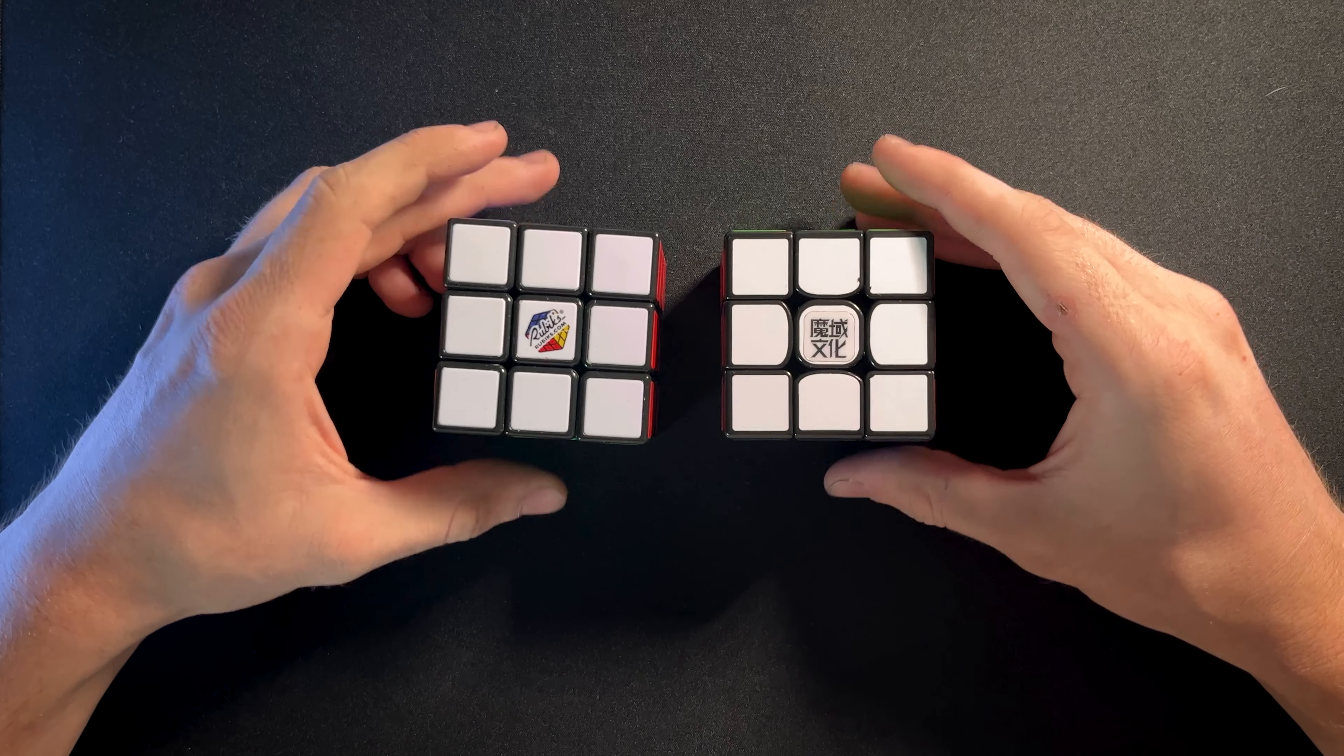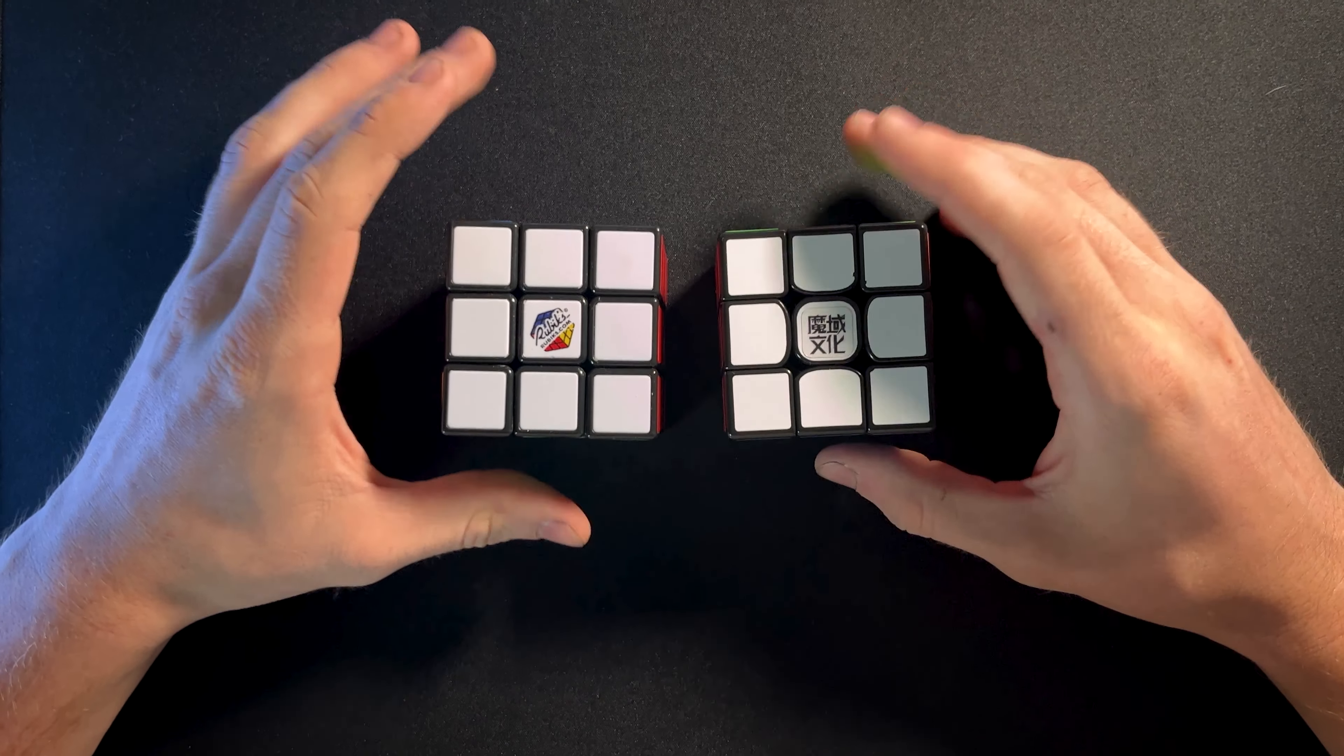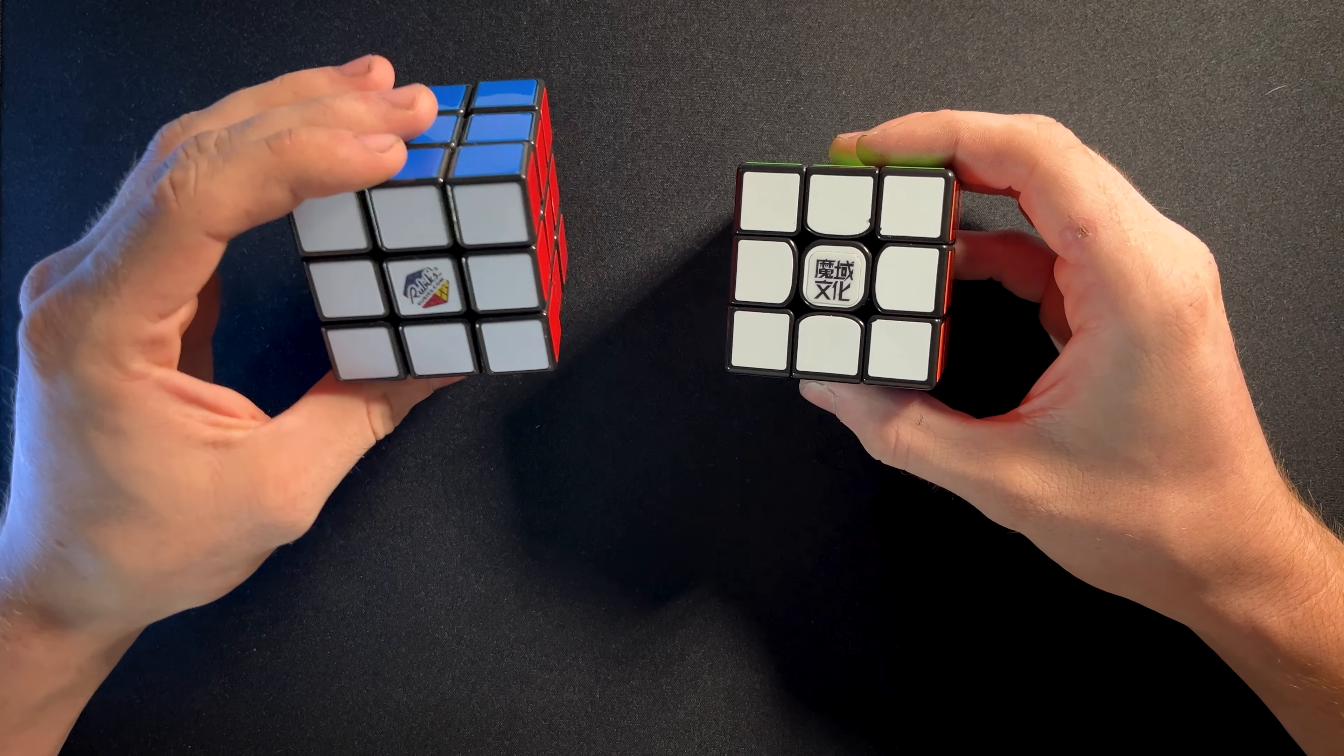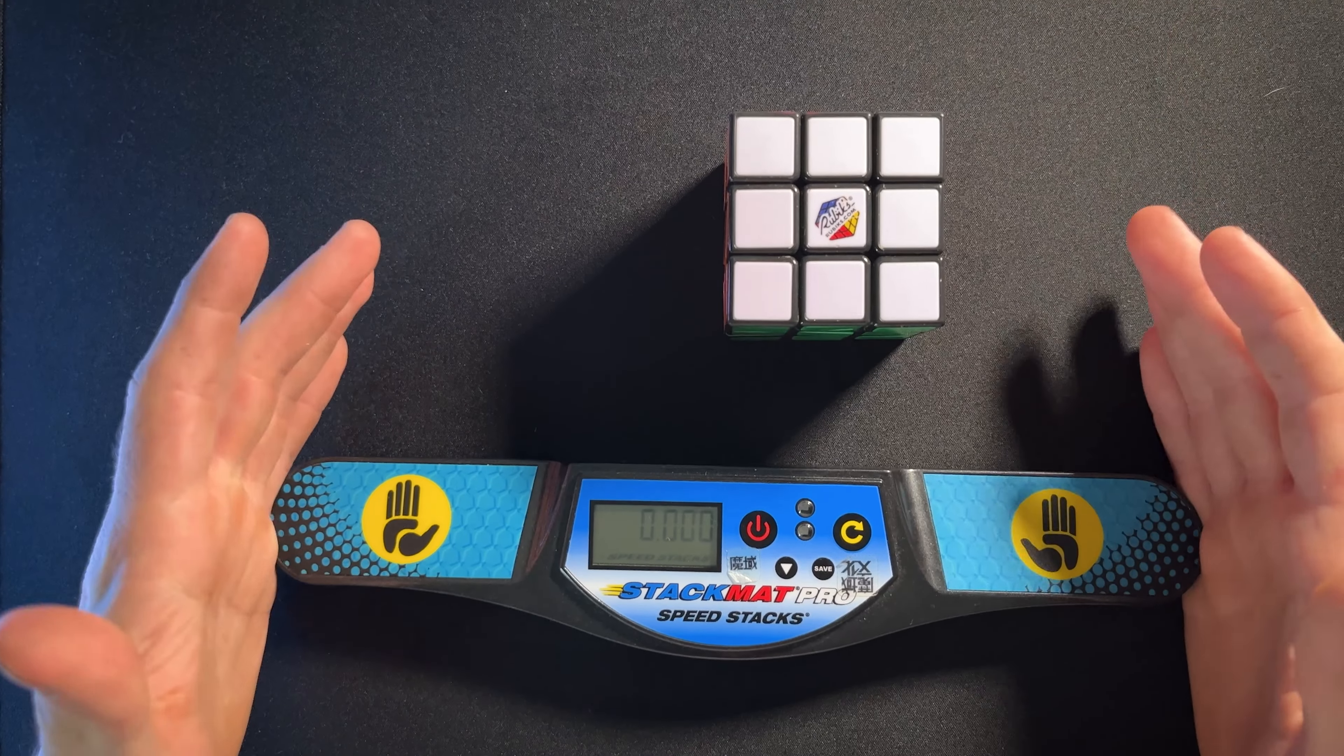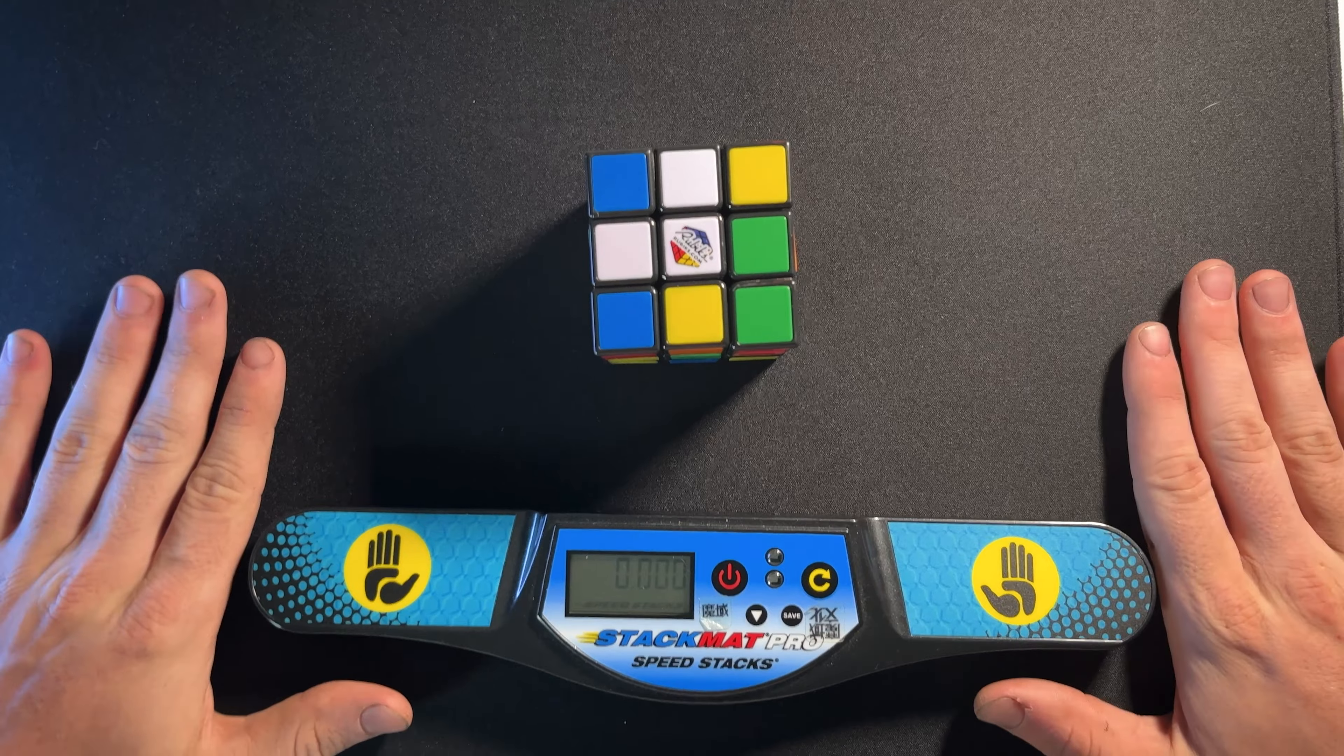So I'm gonna be doing three solves with each cube, and we're gonna see which one does better. And if it really makes a difference to spend $30 on a Rubik's Cube or just the standard, I think it's like 10 bucks or something, to spend the extra money to get a better cube or to use the cheap cube from Walmart or Target. I got my timer here. We're gonna do three solves on the Rubik's brand first. We're gonna do our inspection, and then we'll get started.